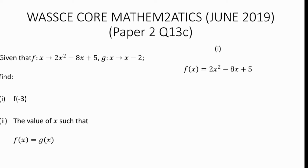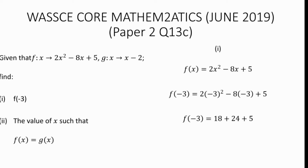From the question, f(x) equals 2x squared minus 8x plus 5. So f(minus 3) equals 2 multiplied by (minus 3) squared, minus 8 multiplied by minus 3, plus 5, which gives 18 plus 24 plus 5. Therefore f(minus 3) equals 47.